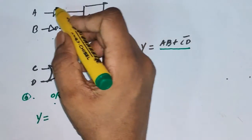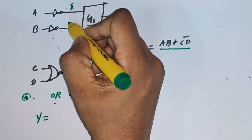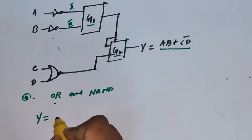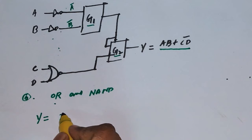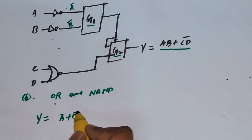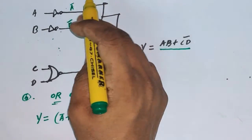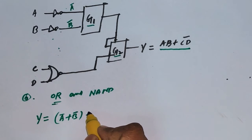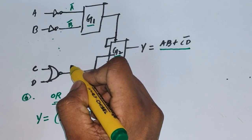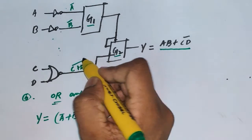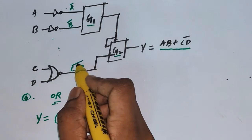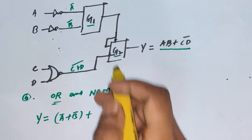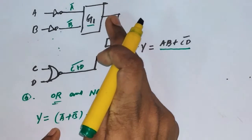Suppose G1 is OR. After the inverters, we have A-bar and B-bar as inputs. After the OR gate, we sum the two complement inputs: A-bar plus B-bar. The OR gate gives the sum of the two inputs at the output. There is also another output coming from the NOR gate on C and D: NOR means C plus D, the whole complement. The two inputs are summed using OR, then the complement is taken — that is the NOR operation.